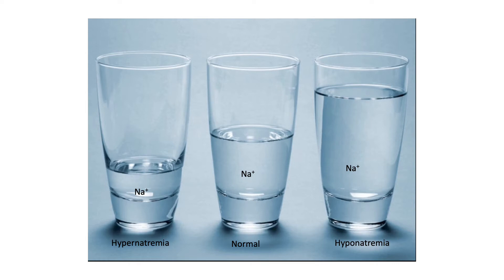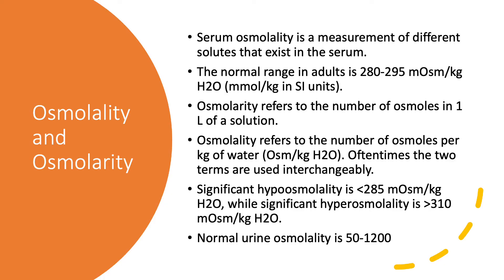Now we move on to osmolality and osmolarity. Most of the time these two terms are used interchangeably, but as a general rule, when we talk about serum osmolality we're talking about the body — the measurement of different solutes that exist in the serum. This is every particle, every ion: sodium, potassium, calcium, protein, glucose — all contributing to serum osmolality. In a normal adult it's between 280 to 295 milliosmoles per kilogram of water, or millimoles per kilogram in SI units.